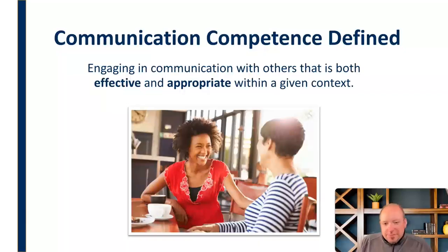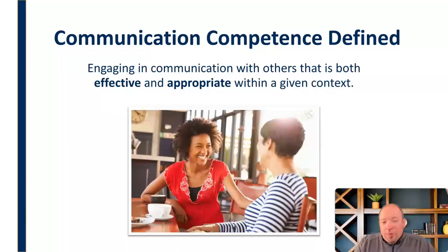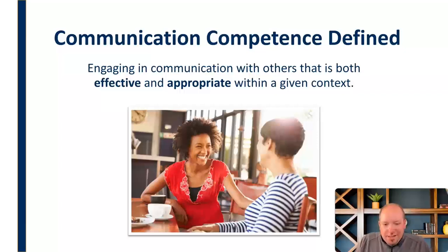That sounds pretty simple and straightforward — effective and appropriate — we can manage that. But then you throw in that context thing and that just throws everything into chaos a lot of times, right? Because what is effective and appropriate in one context may not be at all in another context, or maybe there's a better way or a different way, or a way that somebody else prefers to do it. So really what we're doing is just trying to find the best we can do in a way that is effective and appropriate in a given context.